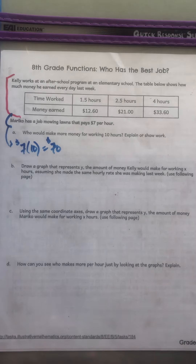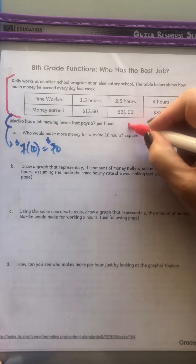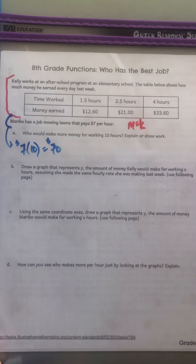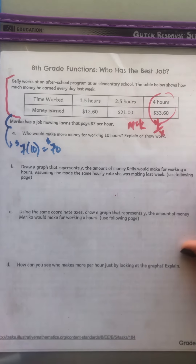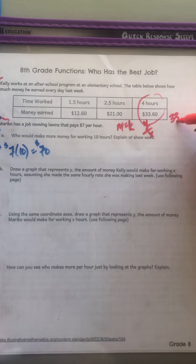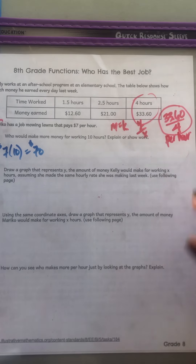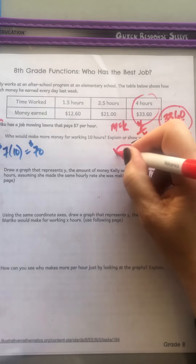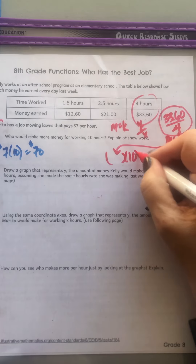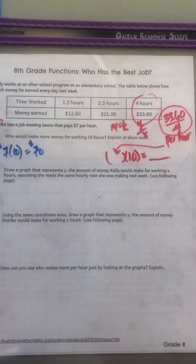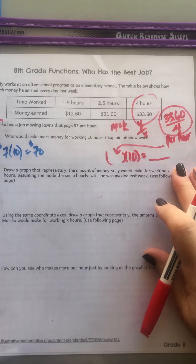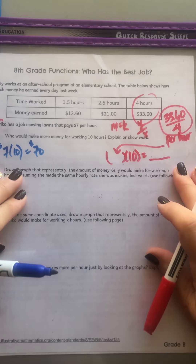For Kelly, you've got to work out some information. You've got to find the slope, or you have to find the constant of proportionality — either one. You're looking at Y divided by X. So I'm going to use this point right here and do $33.60 divided by 4, because that's the Y divided by X. When you get this number, you find out how much Kelly makes per hour. Then you multiply it times 10 to get how much Kelly makes in 10 hours, and compare that to what Mariko makes.